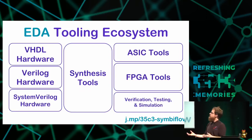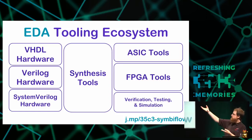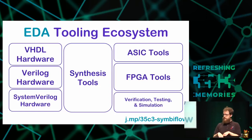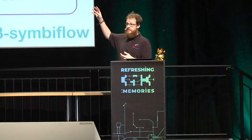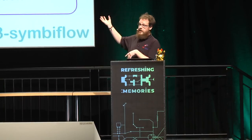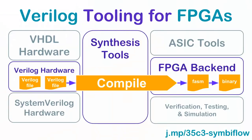We can parallel this in the EDA tooling ecosystem. You have your hardware description in a language like VHDL, Verilog, or SystemVerilog. Then you have synthesis tools that take that and convert it into digital logic. Then you have a backend-specific part that converts it — for ASICs, into an image that you use to make a chip; for FPGAs, into a bitfile that you load into your FPGA. SymbiFlow is currently Verilog tooling for taking Verilog and generating that bitfile end-to-end.